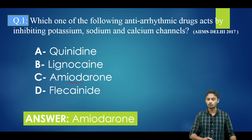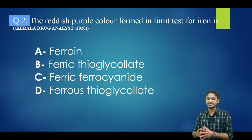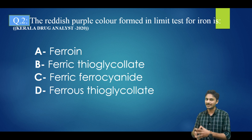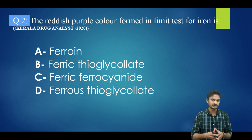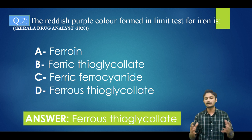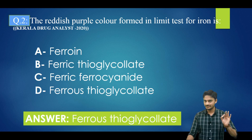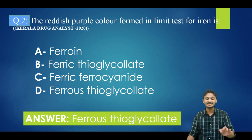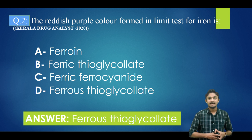Question number two: the reddish purple color formed in the limit test for iron is — options are: ferroin, ferric thioglycolate, ferric ferrocyanide, ferrous thioglycolate. This was one of the questions from the Kerala Drug Analyst 2020 paper. The correct answer is option D — ferrous thioglycolate. The reddish purple color formed in the limit test for iron is due to the formation of ferrous thioglycolate.